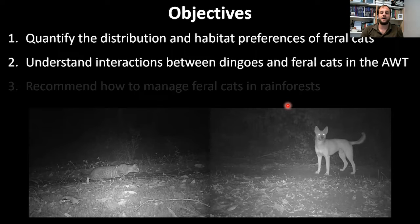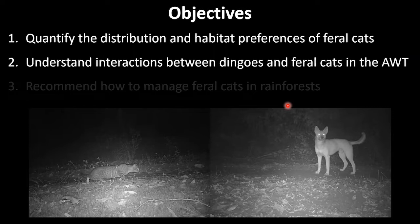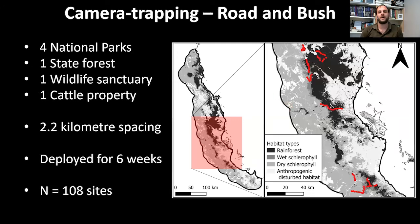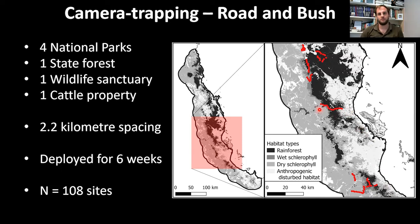For the first two objectives I used the same field data methodology. I carried out camera trapping on roads and in the bush throughout the Wet Tropics, covering four national parks, a state forest, a wildlife sanctuary, and a cattle property. Cameras were spaced at 2.2-kilometer intervals — based on the only feral cat home range estimate available from a rainforest globally — deployed for approximately six weeks each, giving a total of 108 camera trap sites distributed along the main elevation gradient running east to west.